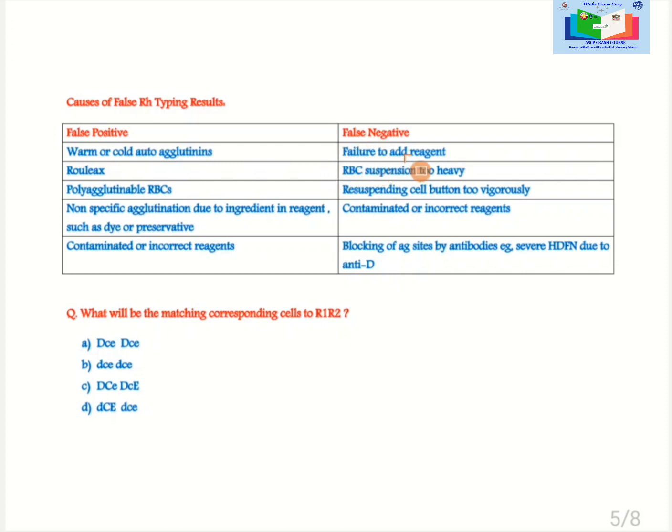False negative: Failure to add reagents. RBC suspension is too heavy. Resuspending cell button too vigorously. Contaminated or incorrect reagents. Blocking of antigen sites by antibodies, for example in severe hemolytic disease of the fetus and newborn due to the anti-D.